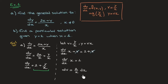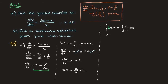Now that the variables are separated, we can go ahead and integrate. The integral of dv equals the integral of 2 over x dx. The left-hand side — think of this as the integral of 1 with respect to v — becomes v, and that's equal to the integral of 2 over x, which is 2 times ln of the absolute value of x. And of course we have a constant of integration, c.